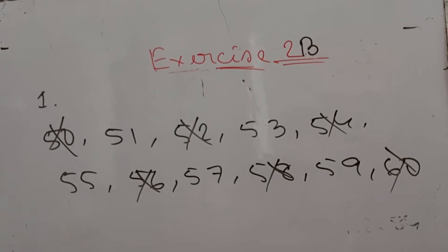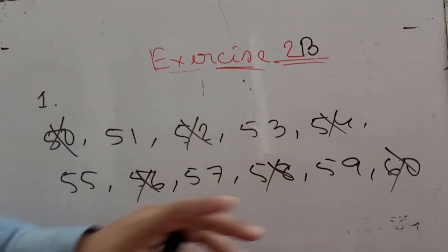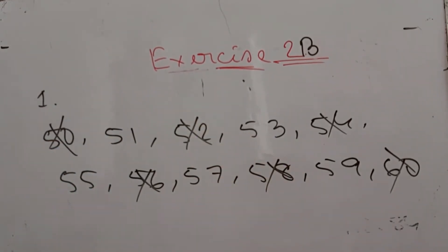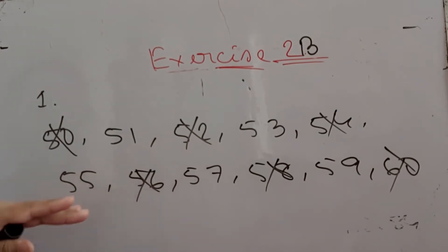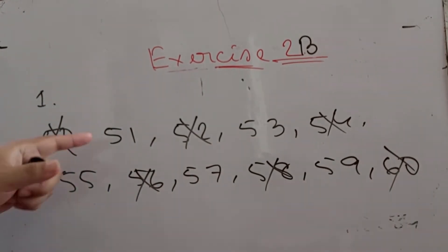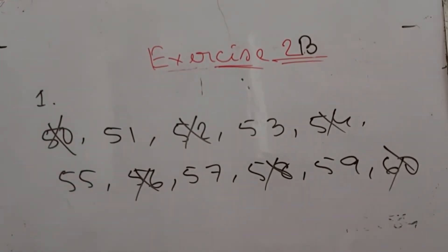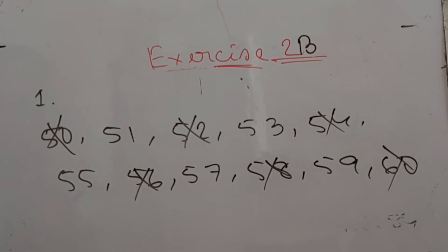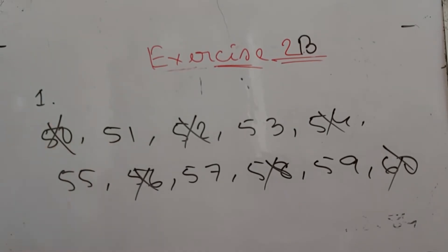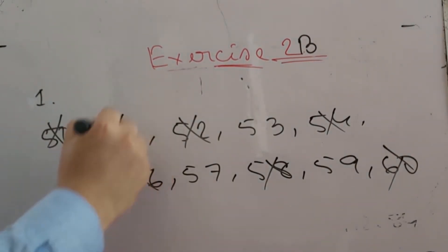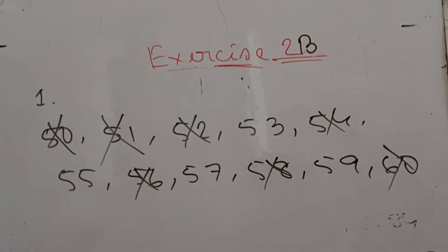Now look at these 5 remaining numbers. We have to find out whether these 5 numbers are prime or not. First one: 51. If you add the digits, 5 plus 1 equals 6. Since 6 can be divisible by 3, that means 51 can be divisible by 3, so it cannot be a prime number.